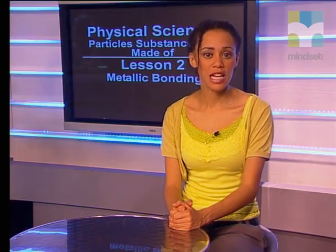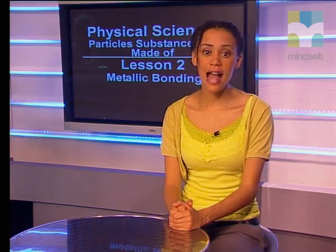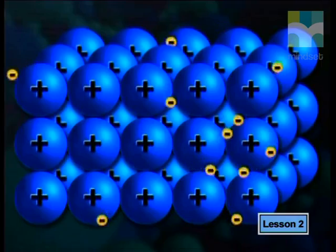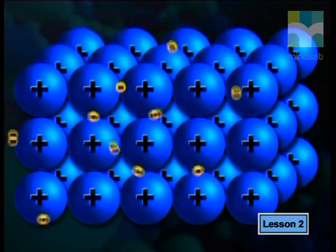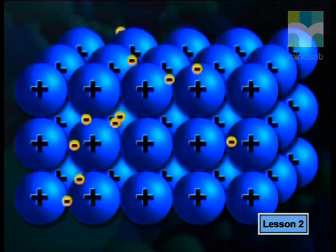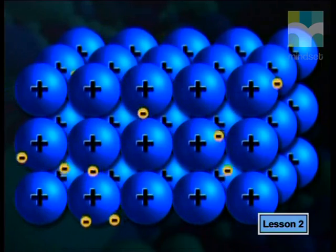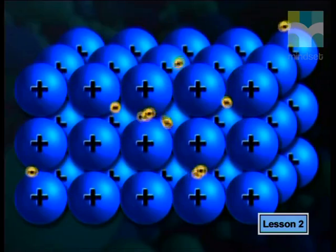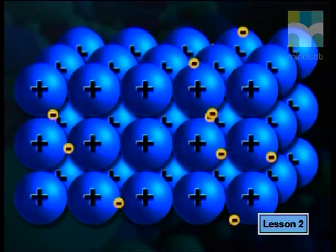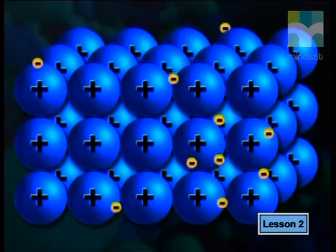In a metallic bond, a lattice forms. A lattice is an orderly arrangement of atoms in a crystal. The atoms are arranged almost like bricks in a wall — a regular, repetitive and ordered arrangement. Metal atoms are arranged in a simple lattice structure, and the outer electrons of each atom are free to move between the different atoms, so the lattice is actually made of positively charged nuclei.